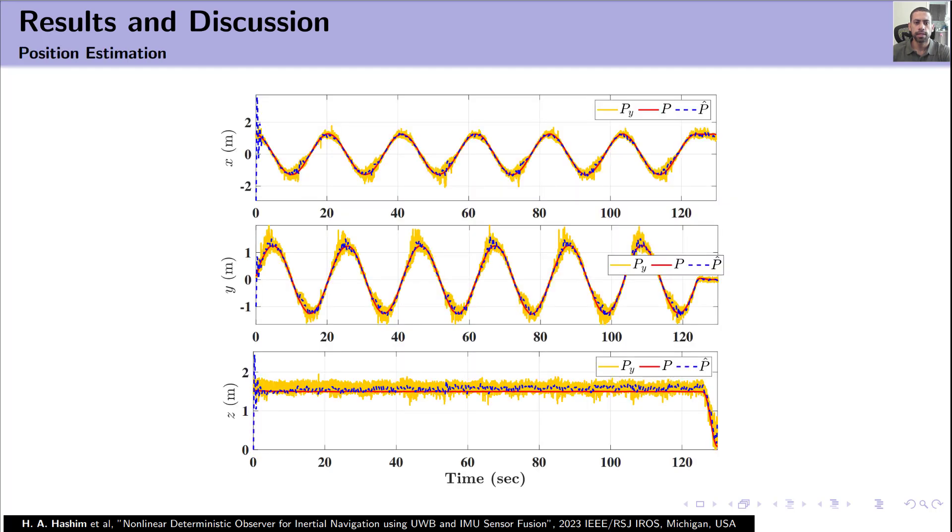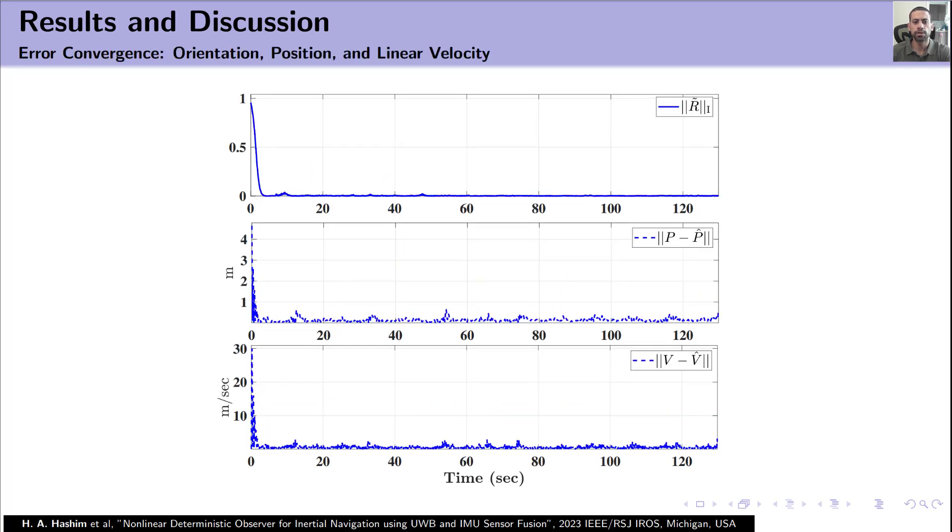This figure illustrates the estimated position in blue color following the true trajectory in red color. The yellow color refers to a reconstructed position. We can see good estimation performance for the position starting from large error initialization to the true trajectory. This figure shows the error convergence in orientation, position, and linear velocity. We can see the error in orientation, position, and linear velocity converged very close to zero.